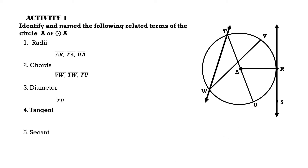Next, number four, tangent: the tangent is line RS. Based on the figure, line RS intersects the circle at only one point, which is point R — what we call the point of tangency. And lastly, number five, secant: the secant of circle A is line TW, which is an extended line. Those are the answers for Activity One.